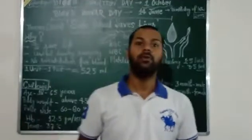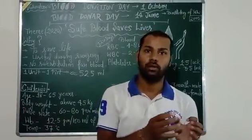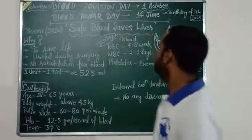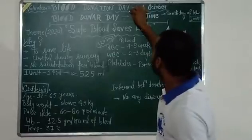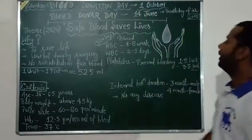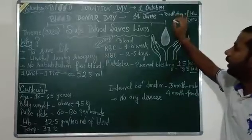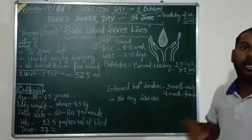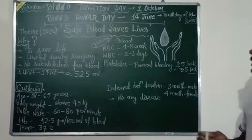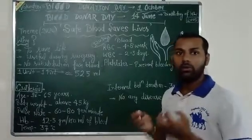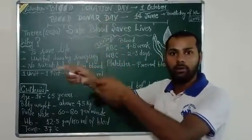Volunteers means anyone can donate blood according to their will. And why is Blood Donation Day celebrated? It is celebrated on 1st October to encourage and motivate donors — the people, the humans — to donate blood. We celebrate Blood Donor Day for that purpose.